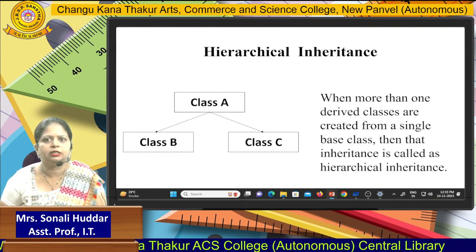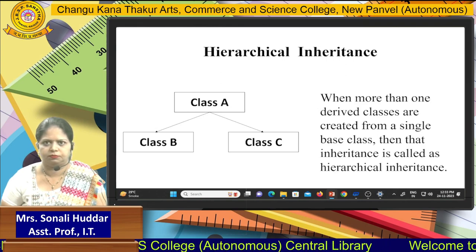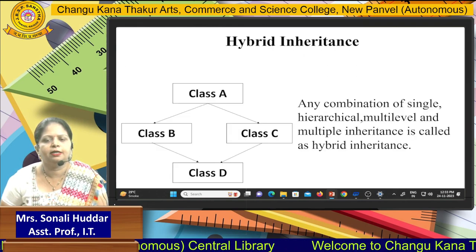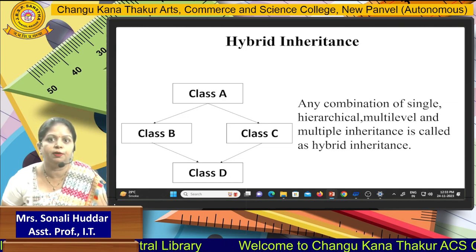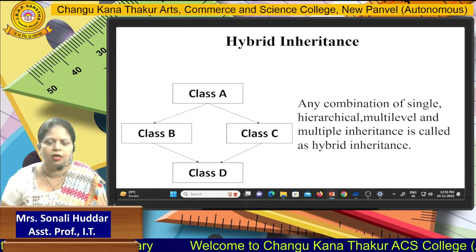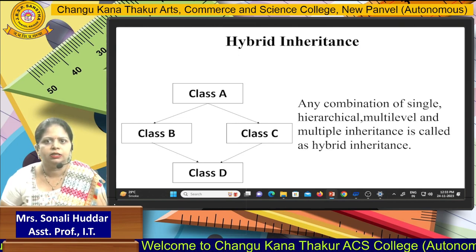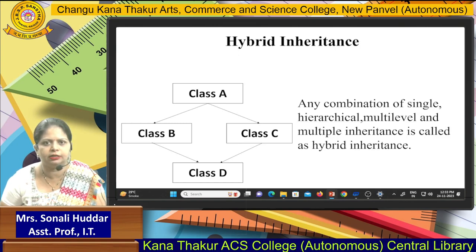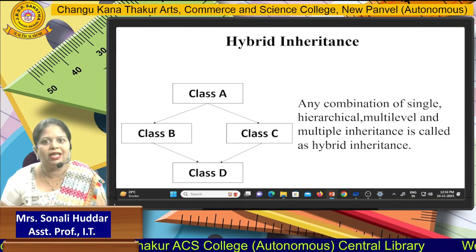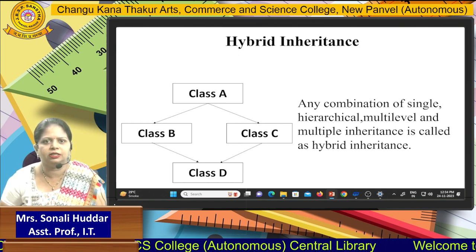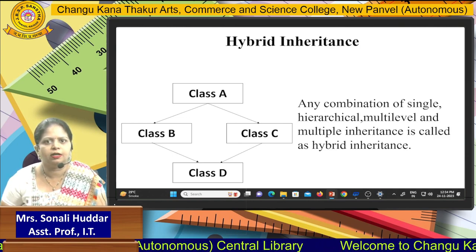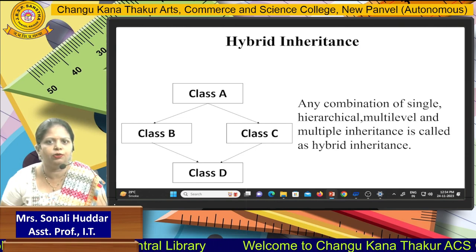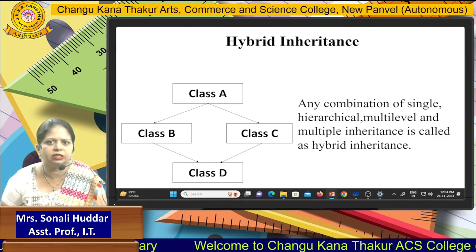The last type is hybrid inheritance, where you use any combination of the remaining four inheritance types — single, hierarchical, multilevel, and multiple inheritance. As the diagram suggests, here class A is the base class, and from that base class you derive two classes: class B and class C.